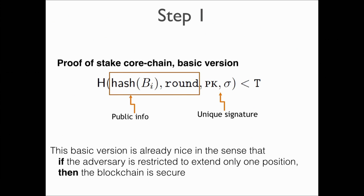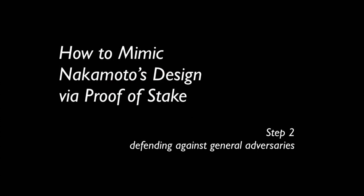This is the first step. The basic version is actually pretty good. Since we removed the transactions, this part is public information and kind of fixed. And with the unique signature, we ensure each miner will have only one chance. We can prove this is already secure if the adversary is restricted to follow the same strategy as in Bitcoin — basically following the longest chain. But this is a restricted adversary. What about a generic or arbitrary adversary?